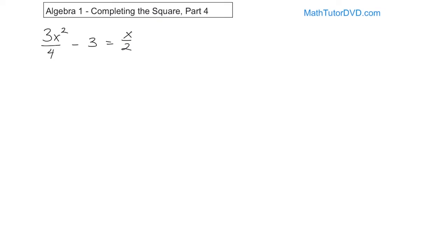You can do the steps in any order. I'm going to work on getting rid of the 4 in the denominator first by multiplying the entire left-hand side by 4, and that means multiplying the right-hand side by 4 as well. The 4s cancel on the first term, leaving 3x squared. Then 4 times negative 3 gives negative 12. On the right-hand side, the 4 over 2 simplifies, so I just have 2x.